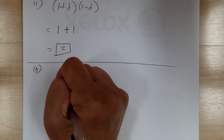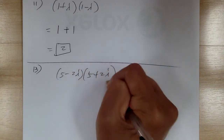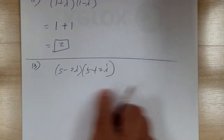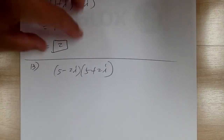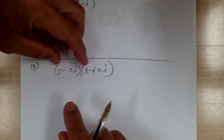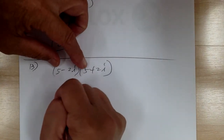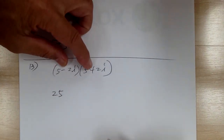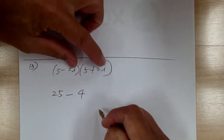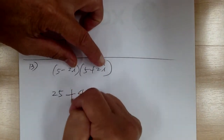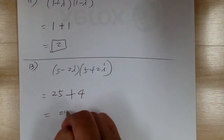Number 13: you have (5 minus 2i)(5 plus 2i). Again, this is a conjugate, so multiply the corresponding parts — the outer and inner terms will cancel out. 5 times 5 is 25; negative times positive is negative; 2 times 2 is 4; i times i is negative 1, so it becomes plus. So this becomes plus, and the result equals 29.